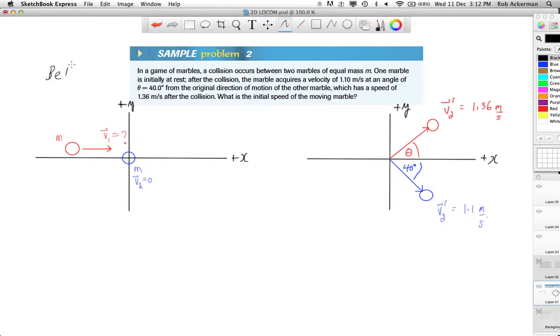Let's have a look at what it looks like. Before the collision, you have the first marble, mass m, the red one, inbound at some unknown velocity v1. It strikes the blue marble, also mass m, that is initially at rest, so v2 equal to zero. Afterwards, the originally stationary marble is moving at an angle of 40 degrees to the original direction of motion of the other marble. That would be the positive x direction, makes a 40 degree angle, and the newly acquired speed is 1.1 meters per second.